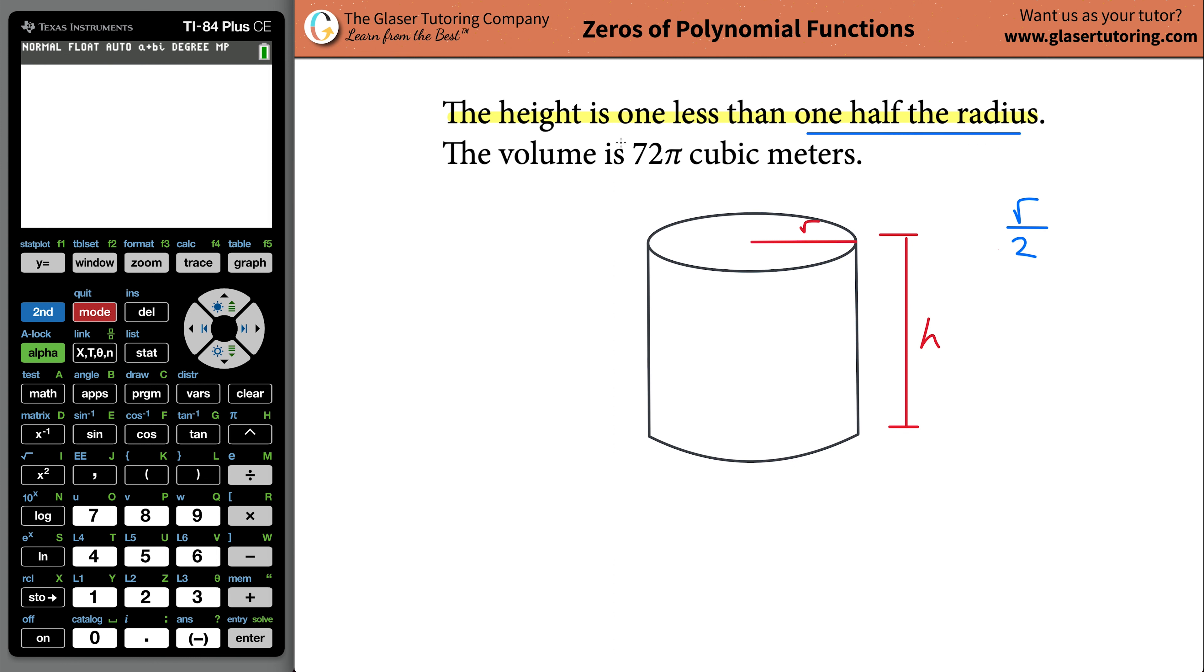So this mathematical symbol represents this part of that mathematical statement. Let me just put that in a slightly different color. So R over two, that's one half the radius. Now it says the height is. So height is, in other words, height equals one meter less than. So one meter less than what? Well, one meter less than one half the radius. So this is one half the radius, R over two, and the height should be one meter less than this. So in other words, you have to subtract one from it. If this is half the radius and you subtract one from it, isn't that the same thing as saying one less than one half the radius? So this is what the height is equal to.